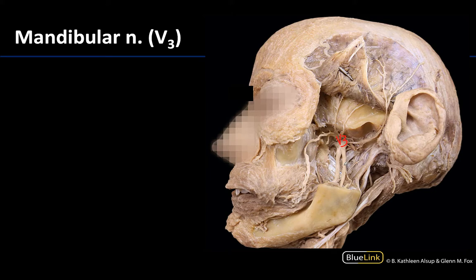The mandibular nerve will exit the skull via the foramen ovale, and that is what we're seeing right here where it exits. It's a large nerve, and you can see the posterior division and its anterior divisions. Note that this nerve will send a branch to the tensor veli palatine, which is typically coming off the nerve to the medial pterygoid — so that is a branch of V3.